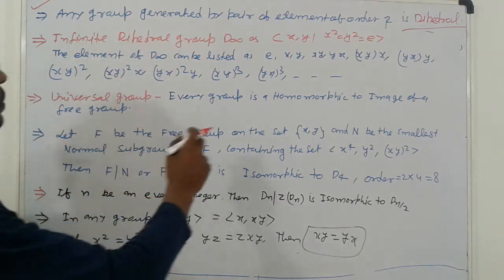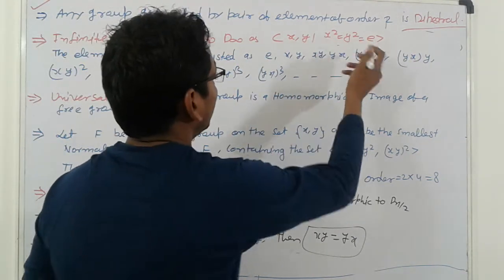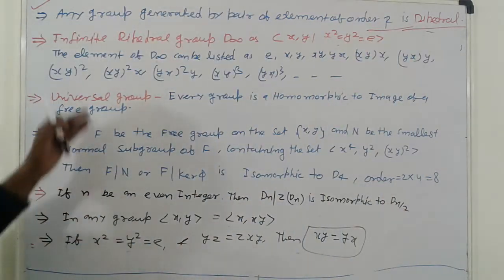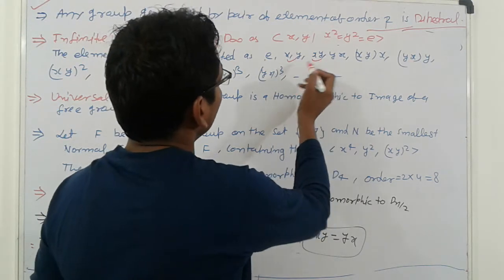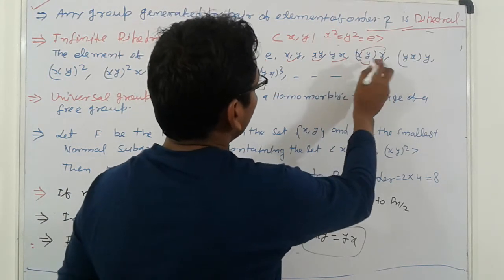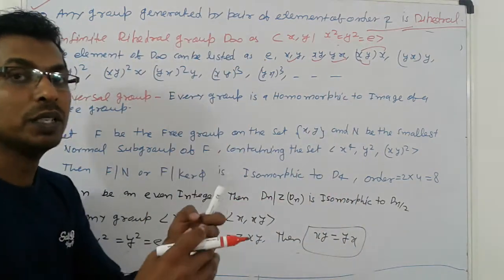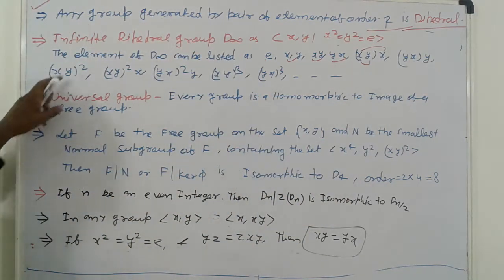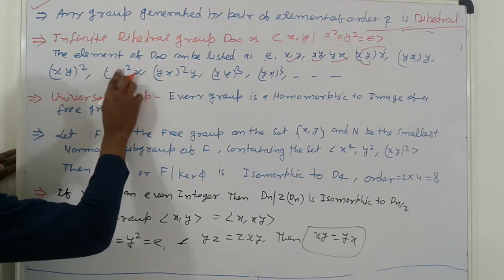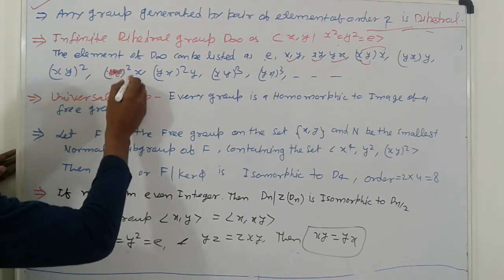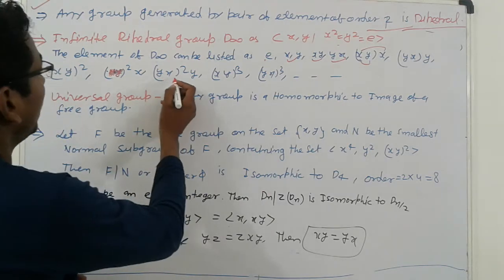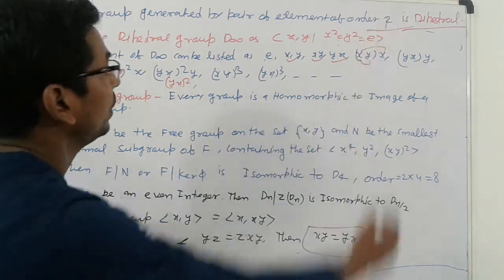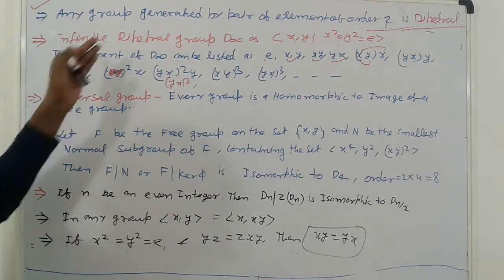Next, infinite dihedral group D∞: the format is ⟨x, y | x^2 = y^2 = e⟩, elements have order 2 — that is a dihedral group. The elements of D∞ can be listed as: e, x, y, xy, yx, xyx, yxy, xyxy, yxyx, xy²x, xy²... and so on up to infinite, keeping the sequence the same. That is the element listing of D∞.